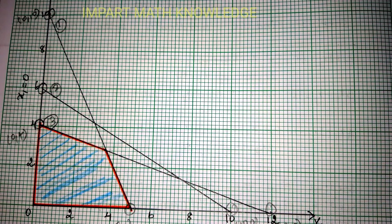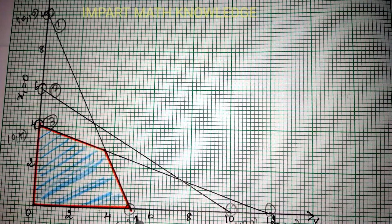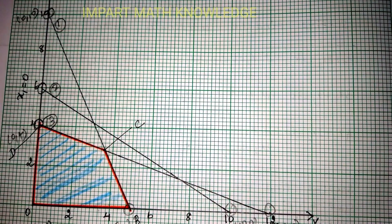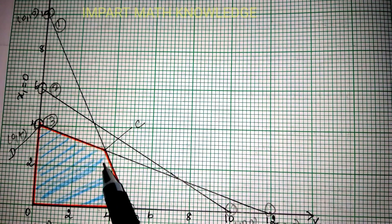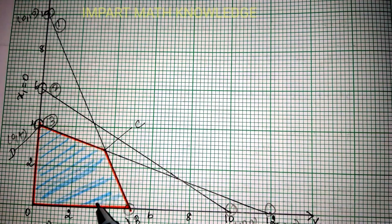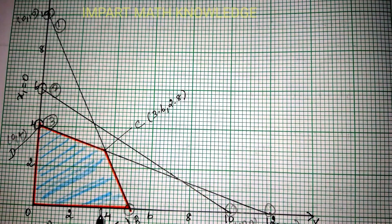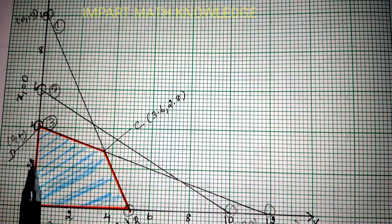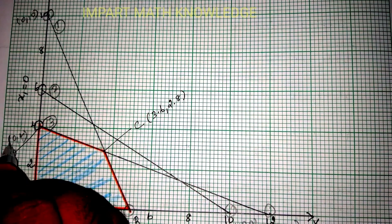Once you identify the feasible region, mark all the corner points: A, B, C, and D. Corner A has coordinate (0, 0), corner B is (5, 0), corner C is approximately (3.6, 2.8) — read from the graph using a scale by counting increments of 0.2 after 2 — and corner D is (0, 4).